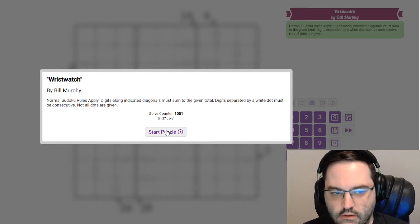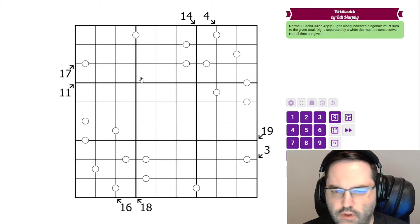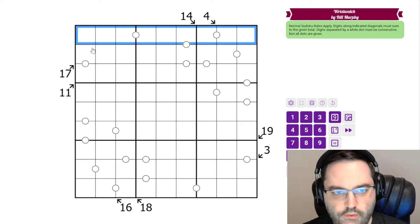This is a little killer and consecutive pairs puzzle. We had consecutive pairs last time I solved a Bill puzzle. We have normal pseudo-curals, 1 to 9 in each row, column, and 3 by 3 box.